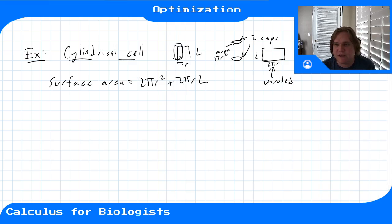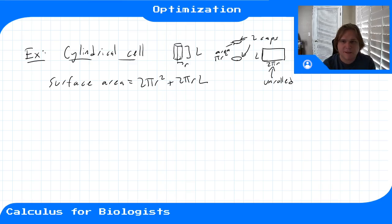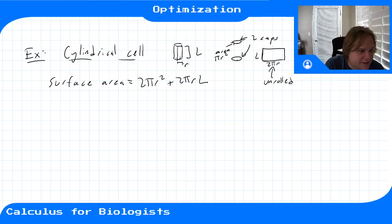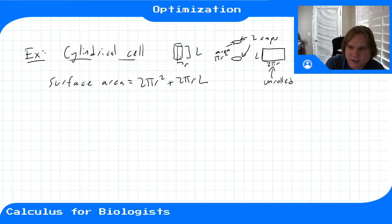So the surface area of the cylinder is: S = 2πr² + 2πrL. We have two circular caps each of area πr², plus the rectangular lateral area of 2πrL.